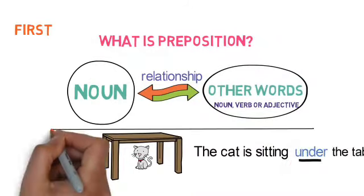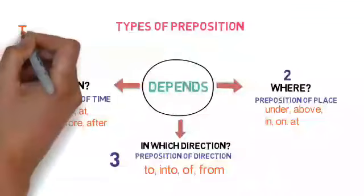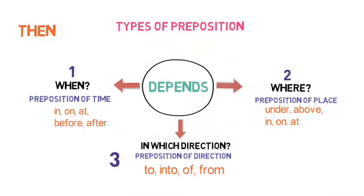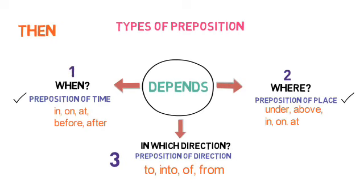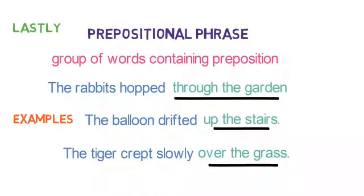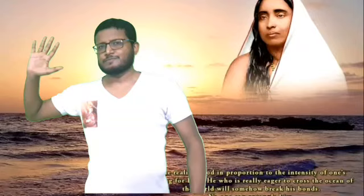Let's take a review. We have come to know what preposition is — it is a word that makes relationship with other words. The types of preposition depend on three conditions: number one, preposition of time; number two, preposition of place; number three, preposition of direction. We also learned about prepositional phrase — a phrase that contains a preposition. Be happy and be healthy, stay at home. Goodbye!